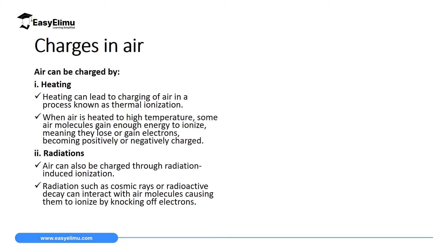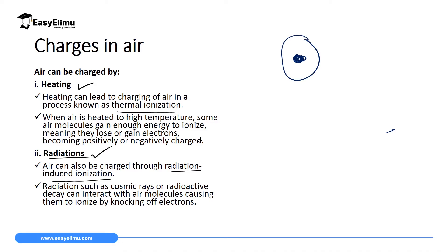Air can be charged in many ways, but we are going to consider only two main ways: heating, in what we call thermal ionization, and radiation, in a process we call radiation-induced ionization. In thermal ionization, remember air is a mix of gases like oxygen, nitrogen, and other gases like noble gases. These gases, like any other substance, are made up of very small particles which we call atoms. These atoms have a nucleus, energy levels, and what we call the outermost energy level, which has electrons called valence electrons.